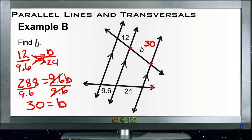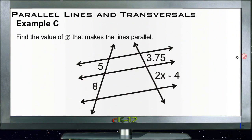Cool. Alright, and Example C says find the value of x that makes the lines parallel. So this is kind of the other way around, right? If we know that the segments are in proportion, then the lines are parallel. If we know the lines are parallel, then the segments are in proportion.